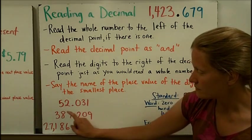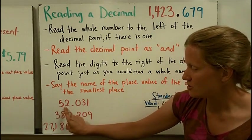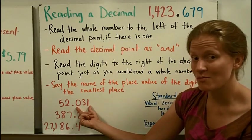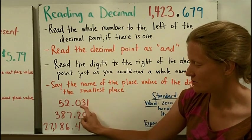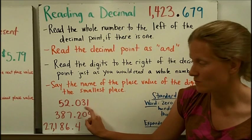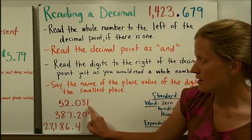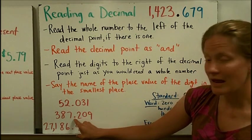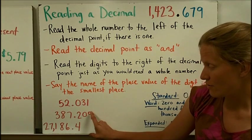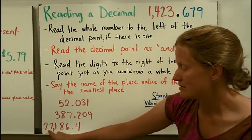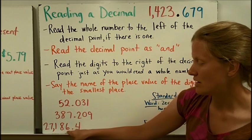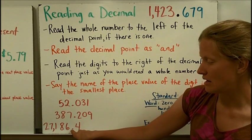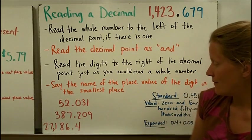So let's practice with a couple down here. This would be fifty-two and, then I'm going to read this just like I would a whole number. It's thirty-one, even though there's that zero there. It's thirty-one, and then this one is in the thousandths place. Fifty-two and thirty-one thousandths. Here, we have three hundred eighty-seven and two hundred nine thousandths. And then finally, twenty-seven thousand, one hundred eighty-six and four. And then that four is in the tenths place. So you would say, and four tenths.